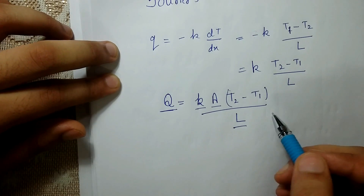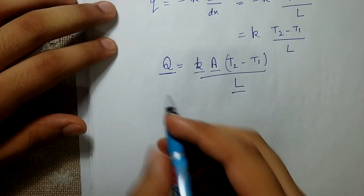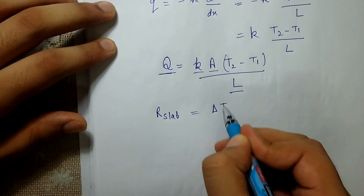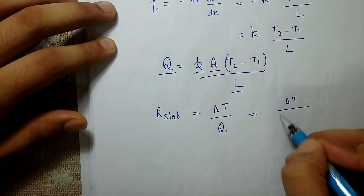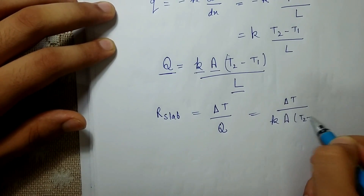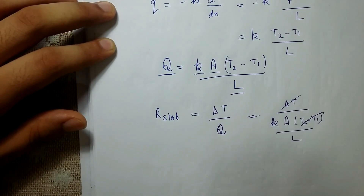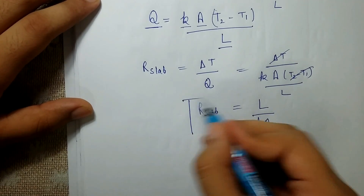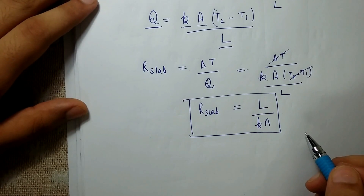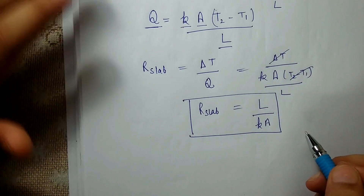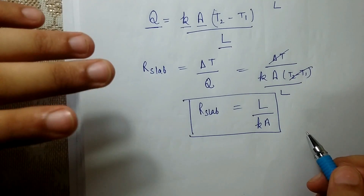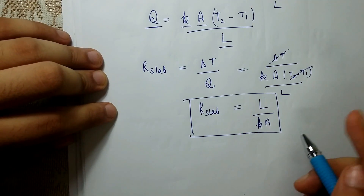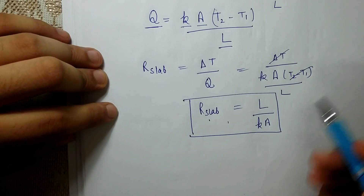The thermal resistance of the slab is defined as R = ΔT/Q. Substituting the expression for Q, the resistance becomes R = L/(K·A). This concept will be very helpful when we discuss composite slabs in the next video, which is why it is introduced here.